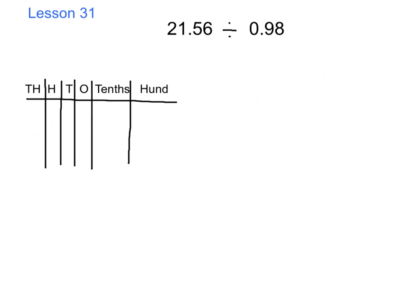This is an example from Lesson 31: 21 and 56 hundredths divided by 98 hundredths. We're going to put this into a fraction. Again, we need to look at our denominator, which is a hundredth. So the most efficient way to rename it as a whole number is to multiply by 100 — both the denominator and the numerator.